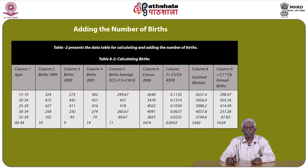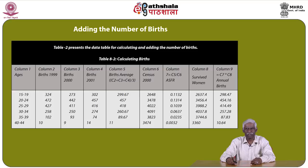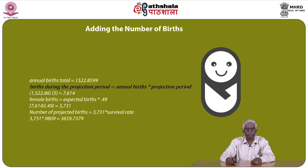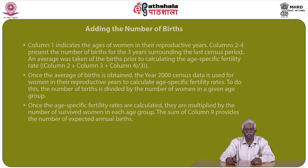Table 2 presents data for calculating the number of births. Column 1 contains broad age groups, column 2 gives births in 1999, column 3 births in 2000, column 4 births in 2001, and column 5 is the average annual births — (column 2 + column 3 + column 4) divided by 3. The births during the projection period equals annual births multiplied by the projection period. Female births equals expected births multiplied by 0.49. The number of projected births equals 3,731 multiplied by the survival rate of 0.9809.